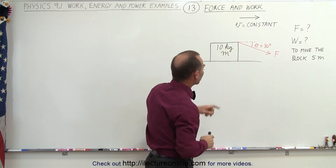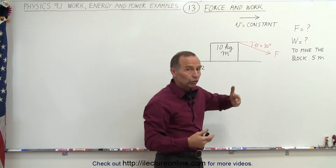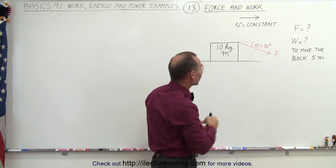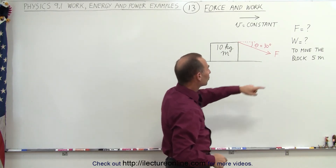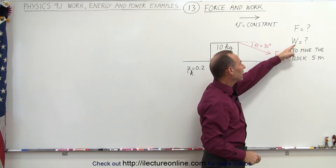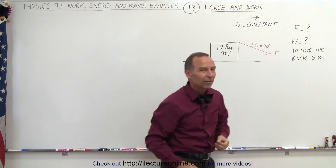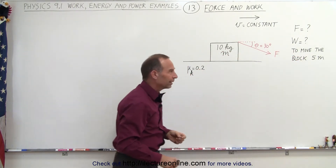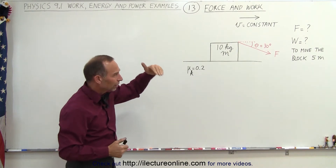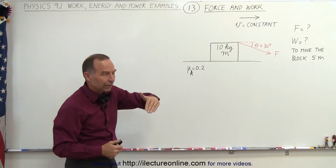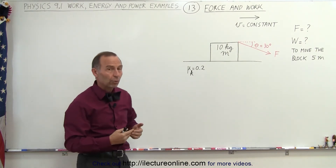What we're trying to find is the force required to move the block at a constant velocity across the floor, and how much work it will take to move the block 5 meters. That's the interesting part — because we're pulling on the block at an angle relative to the horizontal, how do you calculate the work?